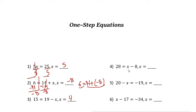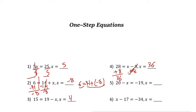Next: x minus 8 = 28. We have subtraction, and the inverse operation of subtraction is addition. So we add 8 to both sides. 28 plus 8 is 36, and x minus 8 plus 8 cancels out, giving us x = 36. Checking: 36 minus 8 is indeed 28.